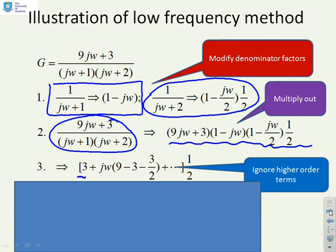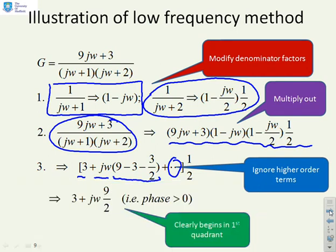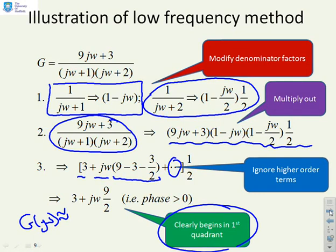We end up with 3 + jω times (9 - 3 - 3/2) plus, and here's the key bit: we haven't written out all the higher order terms, the omega squared and omega cubed, because if omega is small we can ignore those terms. So we get G(jω) is approximately 3 + jω times 9/2, and that's obviously for small omega. What this tells you is that for low frequencies you are in the first quadrant, so the phase is positive and indeed the gain is increasing.